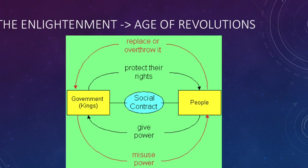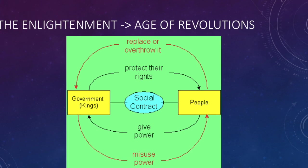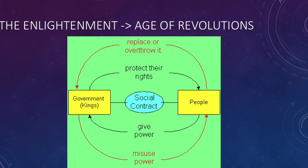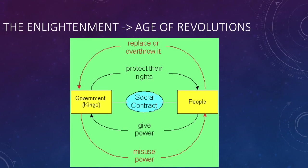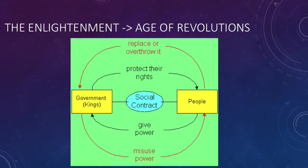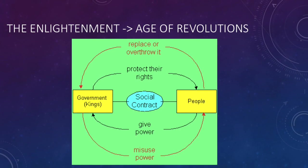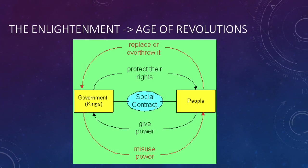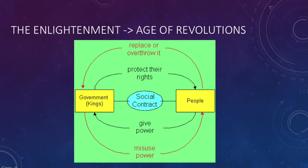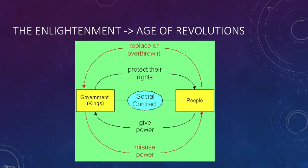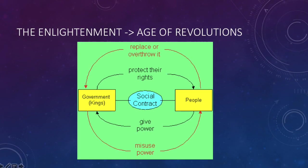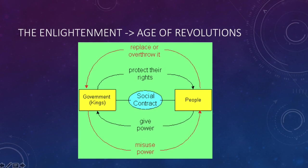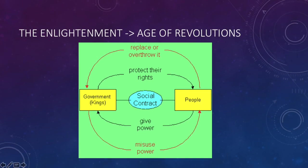Thomas Hobbes comes up with this idea of the social contract to explain where legitimacy comes from — what gives governments the right to rule over us. In medieval Europe, this was answered by the divine right of kings, the idea that kings were given the divine right to rule. You see this idea of divine right not just in European societies but in other societies as well. But the Enlightenment allowed Thomas Hobbes the environment to come up with an alternative theory of the origins of governmental legitimacy.